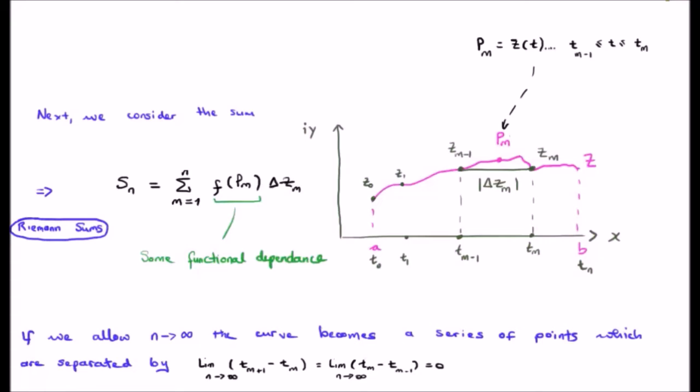Now, if we allow n to go to infinity, so we don't change the length of our curve, but we increase the number of points. Well, the curve becomes a series of points, and they're all separated. Of course, they're separated by t sub m minus 1, excuse me, t sub m plus 1 minus t sub m, or t sub m and t sub m minus 1.